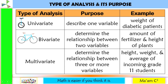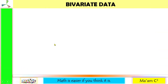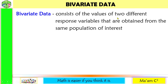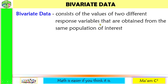In our lesson today, we will focus more on bivariate data. Bivariate data consists of the values of two different response variables that are obtained from the same population of interest. Take note: the two different response variables should come from the same population.